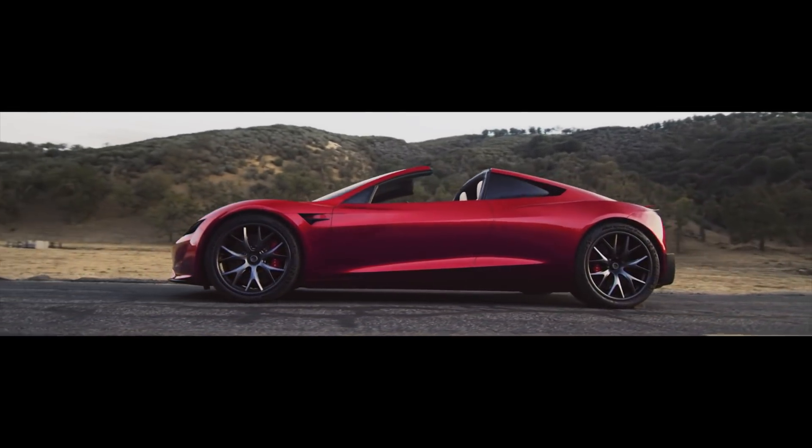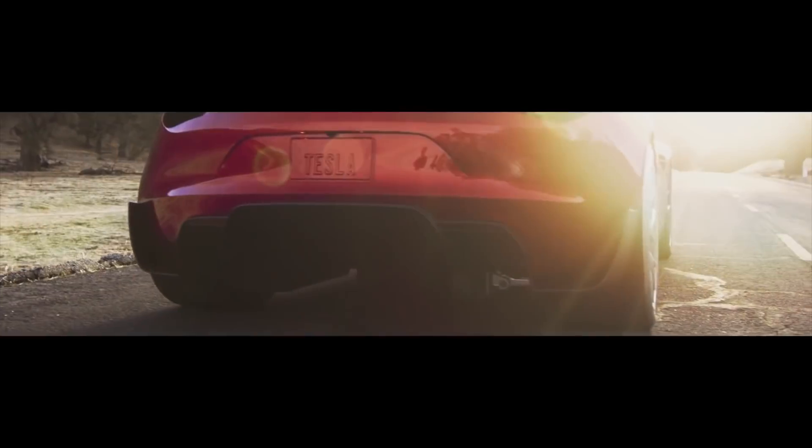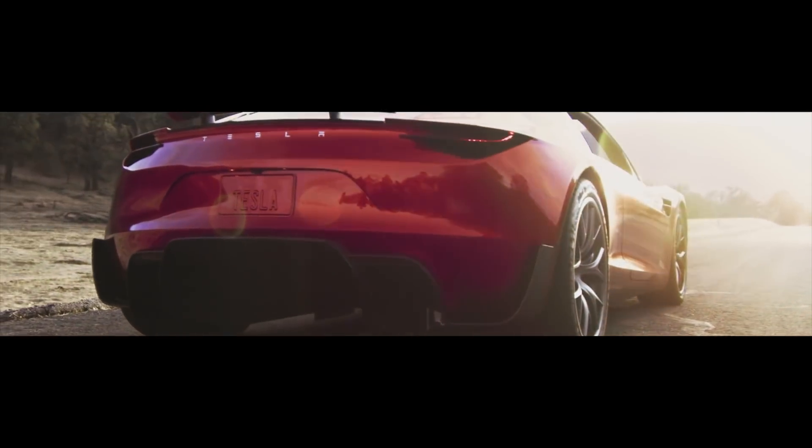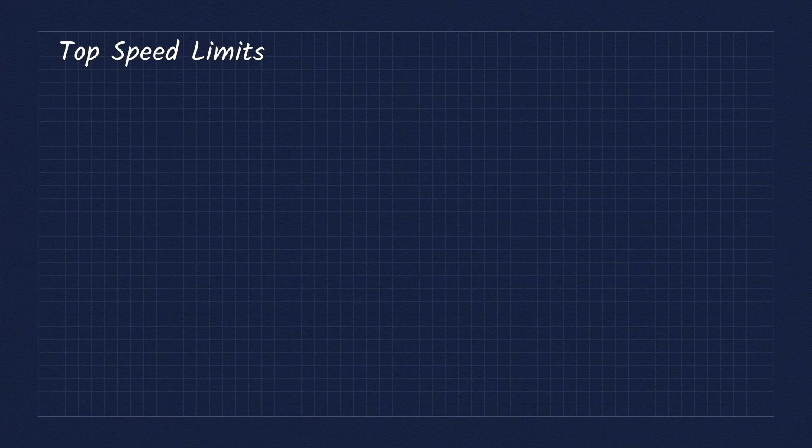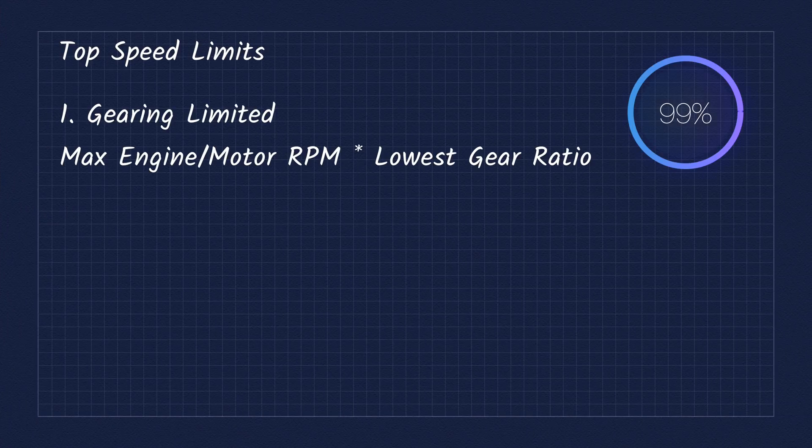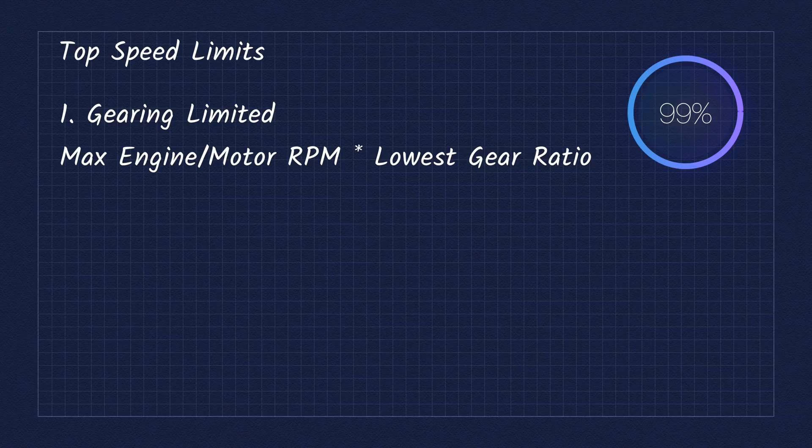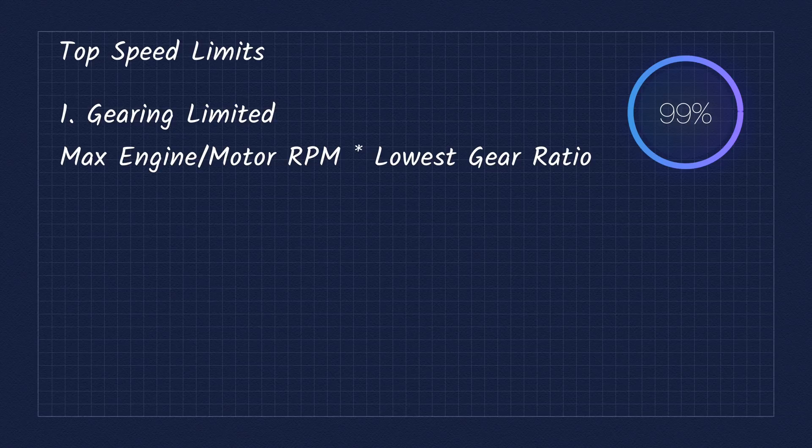So now that you're a master of engines, motors, and aerodynamics, let's talk top speed. There are a few limiting factors that will determine your top speed. One is how fast the engine can spin and how low the lowest gear ratio is. So even if you have 2000 horsepower, the car would be gearing limited to this speed.